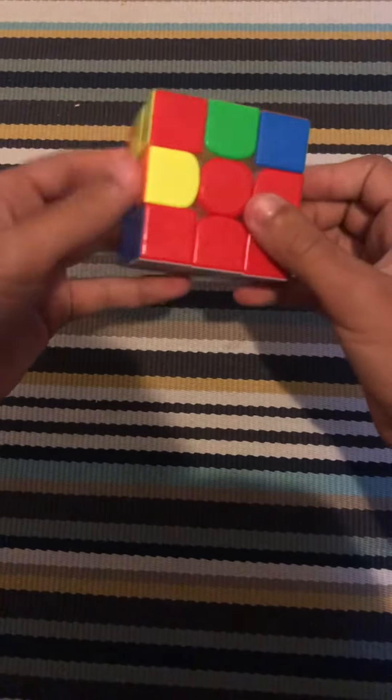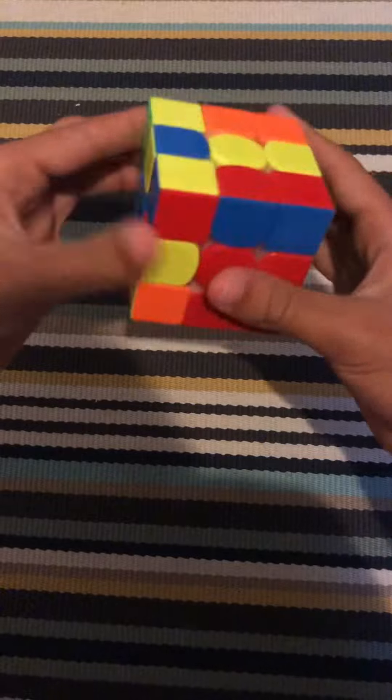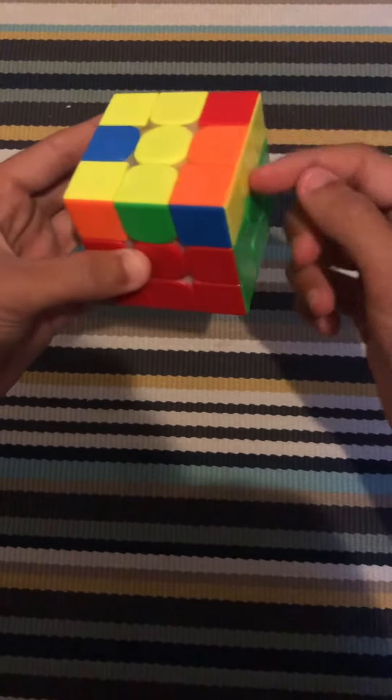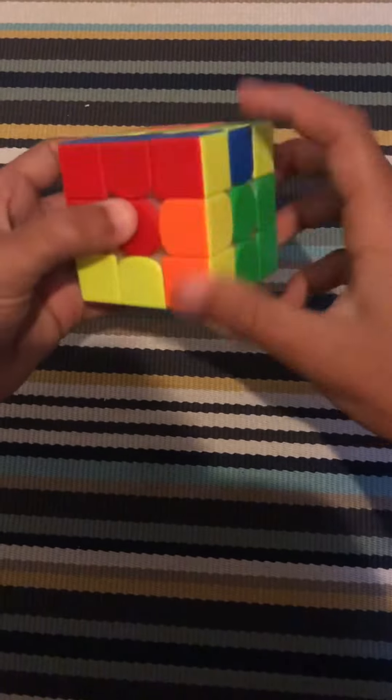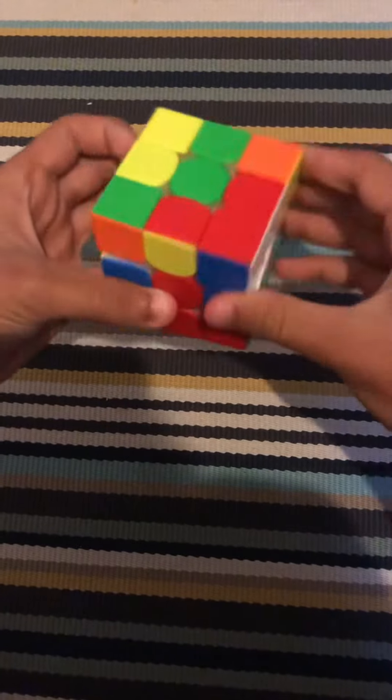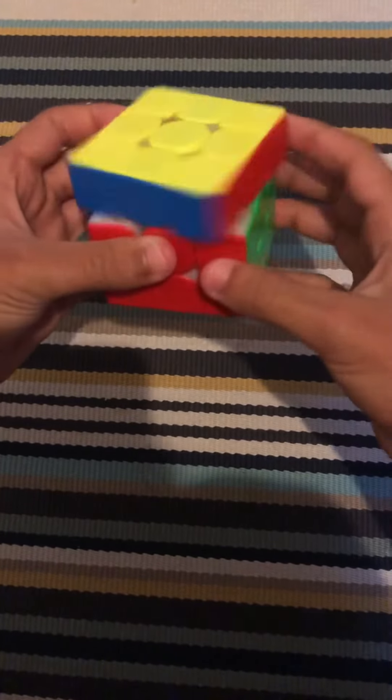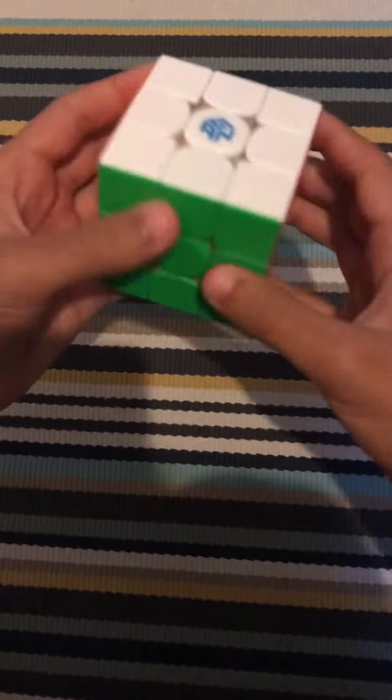And then I notice this edge needs to go in here, so I just do it the beginner's way, and then I notice OLL, and then this PLL, and then the AUF, and that's it. Thank you.